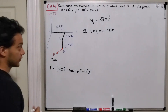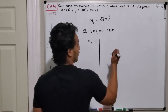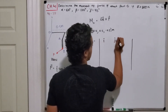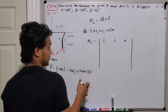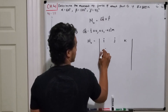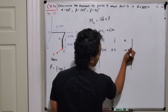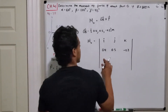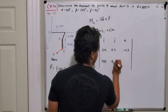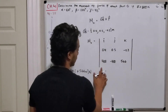Now that we have vector OB and force F in Cartesian form, the moment about O equals the cross product set up as a 3×3 determinant with i, j, k in the first row. The second row is vector OB: 0.4, 0.5, and negative 0.3. The third row is force F: 400, negative 400, and positive 566.